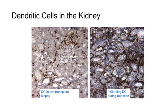The following immunohistochemical staining of two renal biopsies nicely confirms this. It shows, on the left, presence of dendritic cells before transplantation and, on the right, the influx of increasing numbers of DC during a rejection episode.